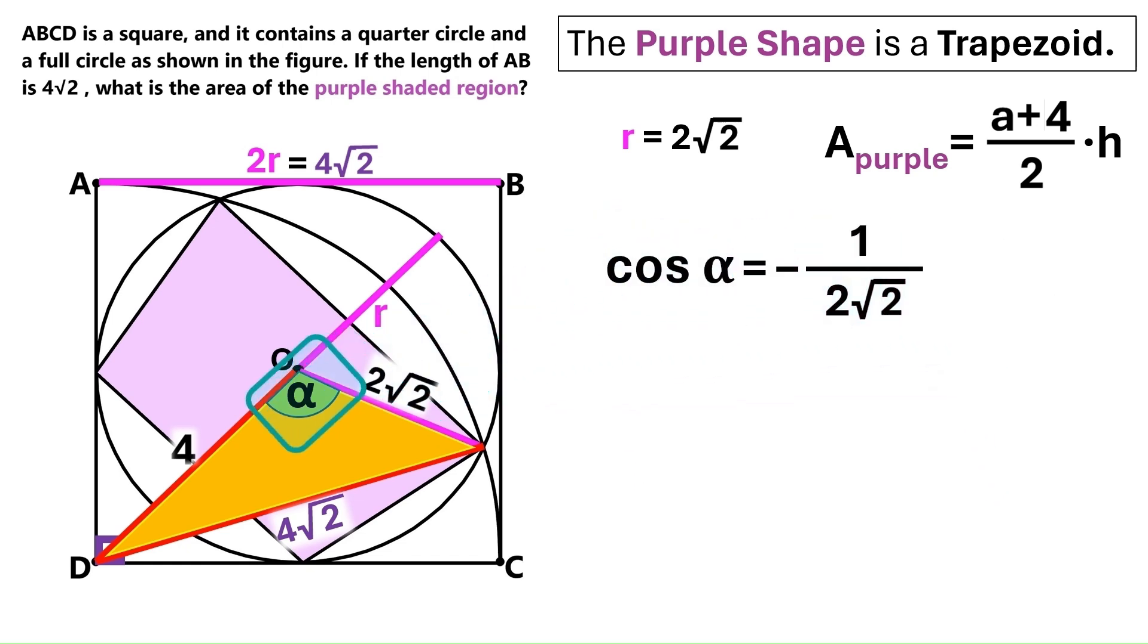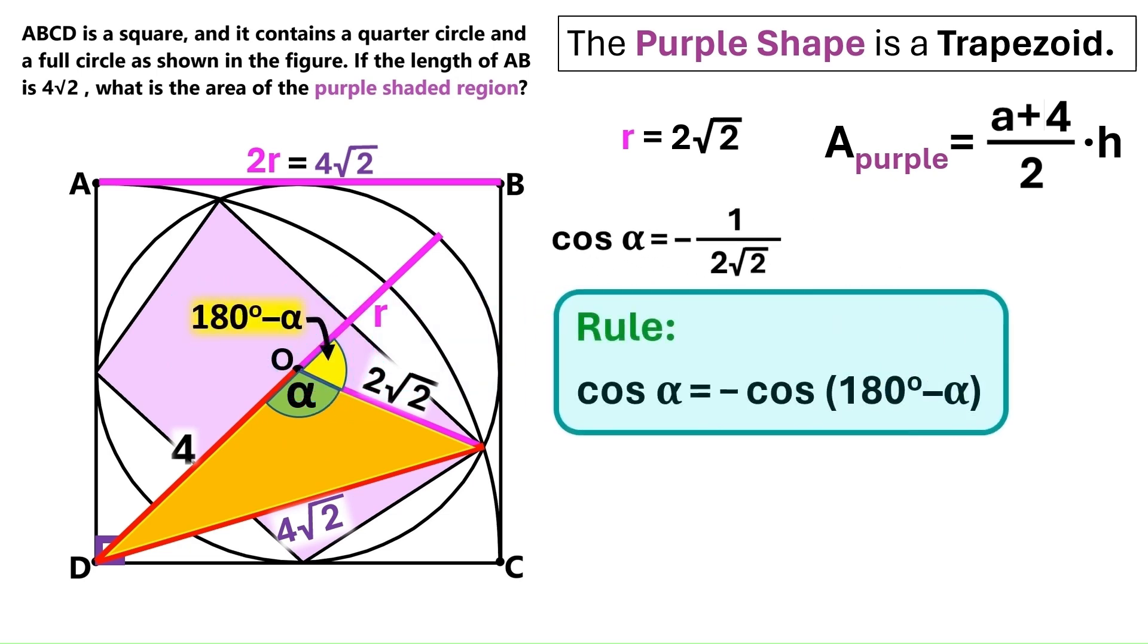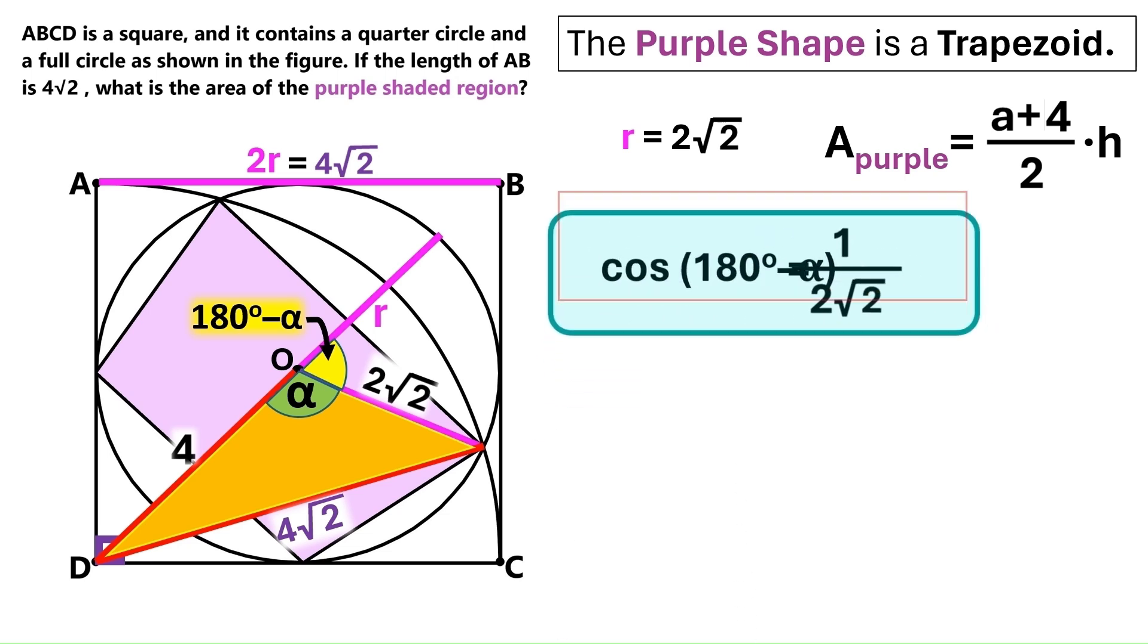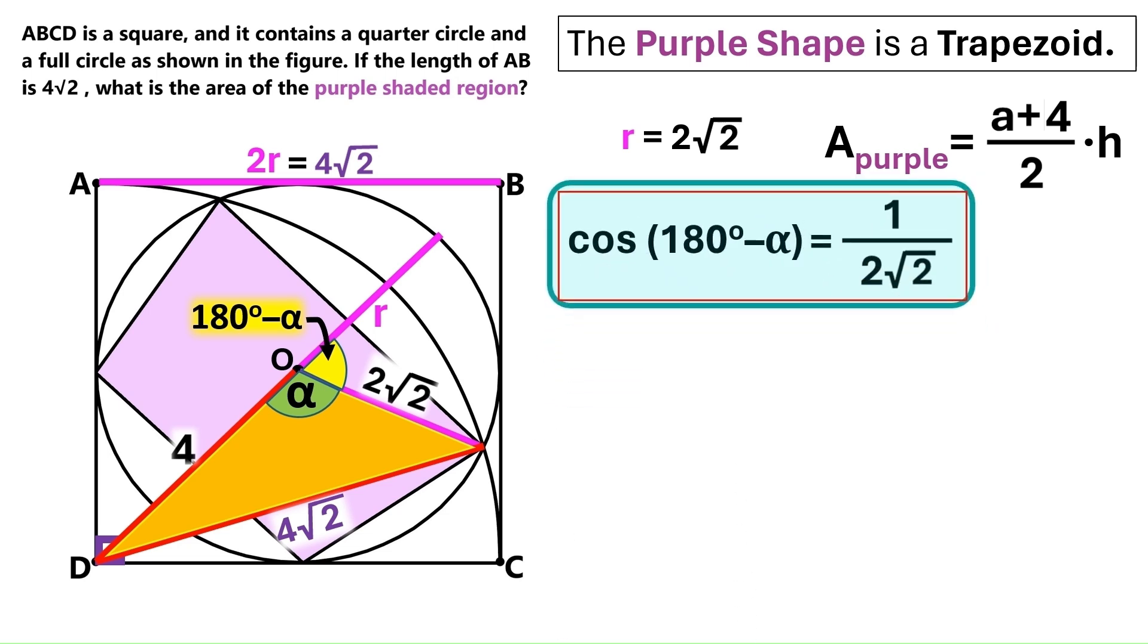And if this is alpha, this angle over here must be 180 minus alpha. And according to this trigonometry rule, we can find cosine 180 minus alpha by multiplying cosine alpha by minus 1. We know what cosine alpha is. So let's put that value in here. And we find that cosine 180 minus alpha is 1 over 2 times radical 2.